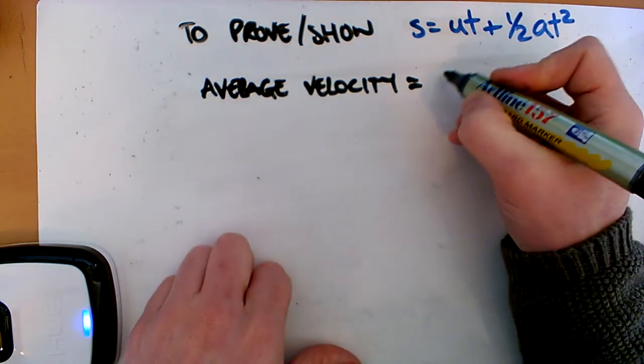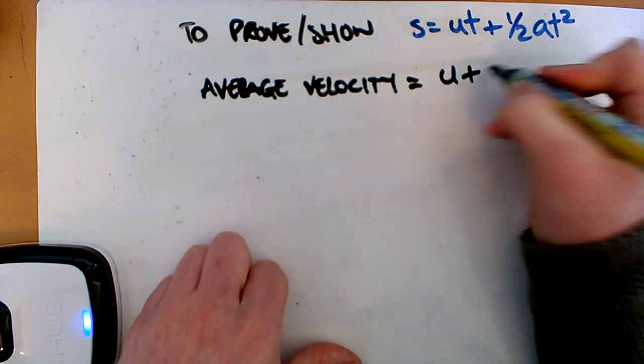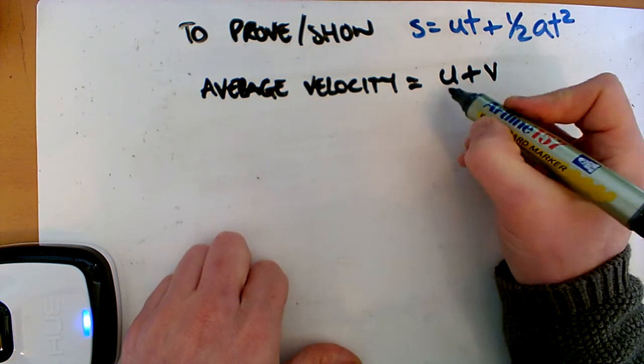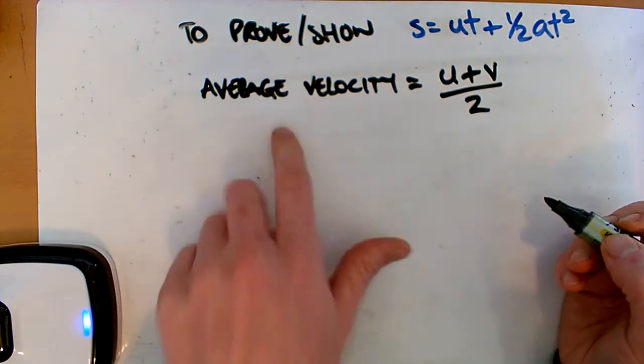So for velocity, our initial velocity is just U. And then we just add it to our final one, which is V, and we divide it by 2. Okay, so that's our average velocity.